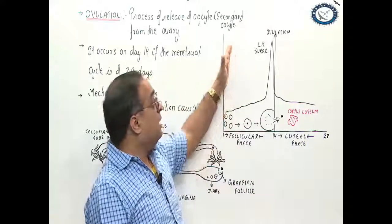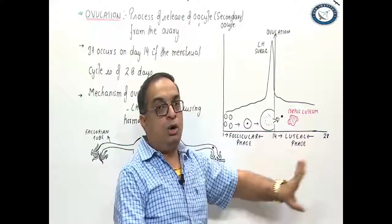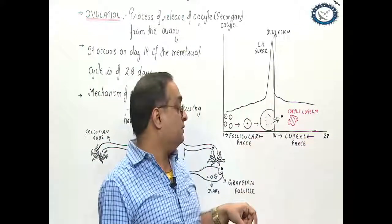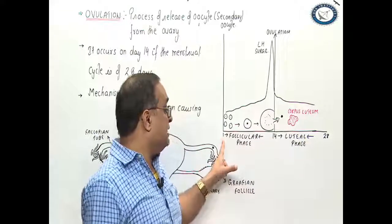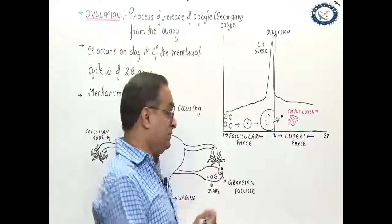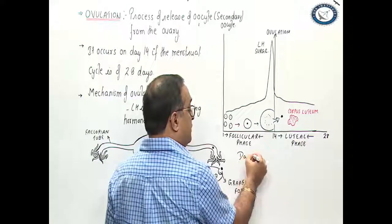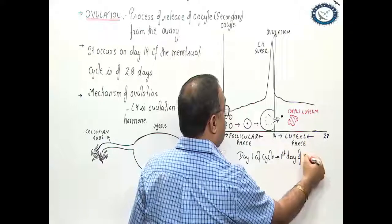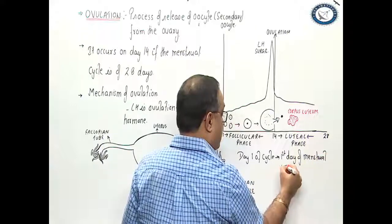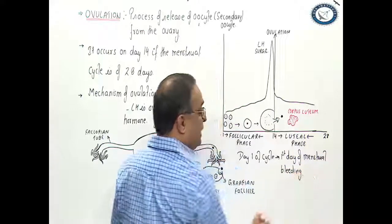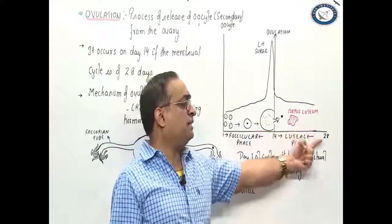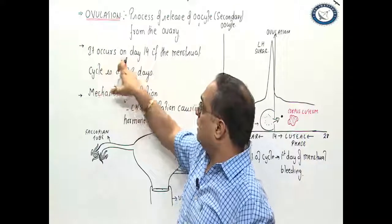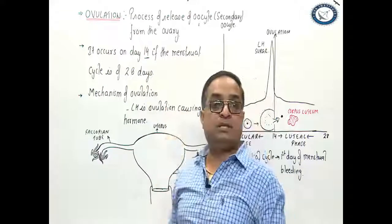Looking at this graph, I have shown a menstrual cycle of 28 days. Not all females have a perfectly 28-day cycle. If the cycle is 28 days, then ovulation occurs on day 14. Day 1 of the cycle is the first day of menstrual bleeding. If her cycle is 28 days, ovulation occurs on day 14.